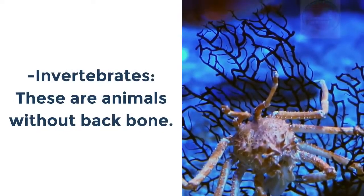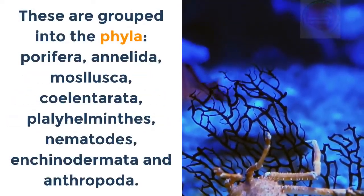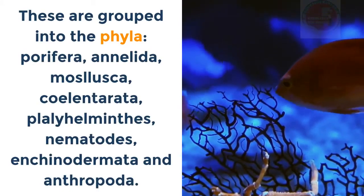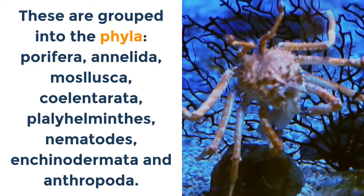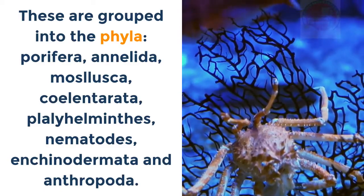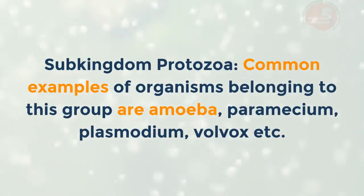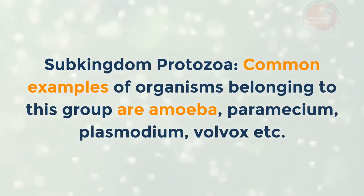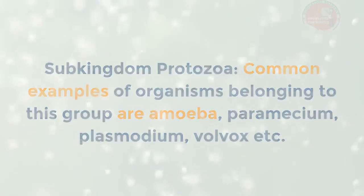Kingdom Animalia: The animal kingdom is divided into two sub-kingdoms — vertebrates and invertebrates. Invertebrates are animals without a backbone, grouped into the phyla Porifera, Annelida, Mollusca, Coelenterata, Platyhelminthes, Nematoda, Echinodermata and Arthropoda. Sub-kingdom Protozoa: common examples include Amoeba, Paramecium, Plasmodium, Volvox, etc.